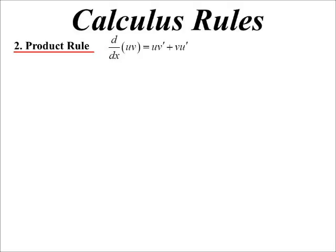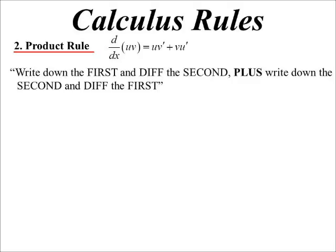This is the formal way of doing it where u and v are the two functions, and they're uv' + vu'. Here it is: write down the first and diff the second, plus write down the second and diff the first. Now the quicker you say it the more impressive it is.